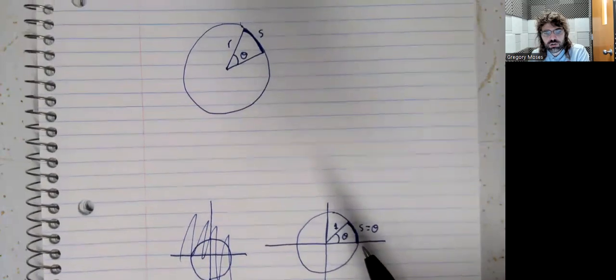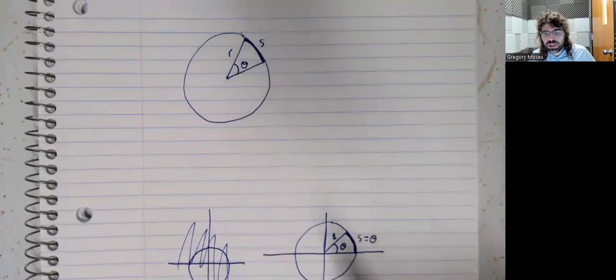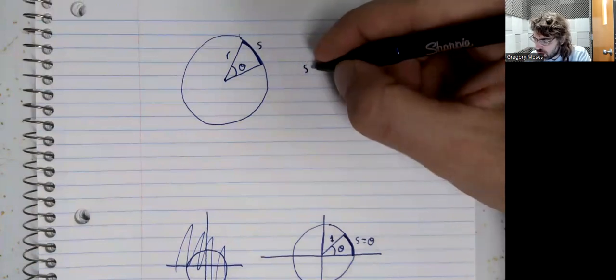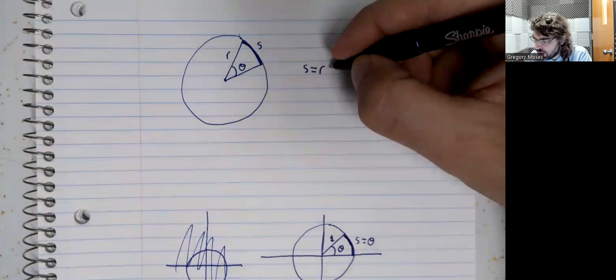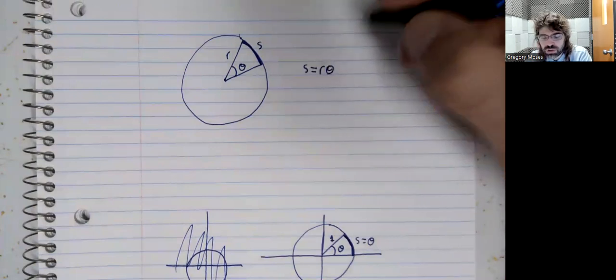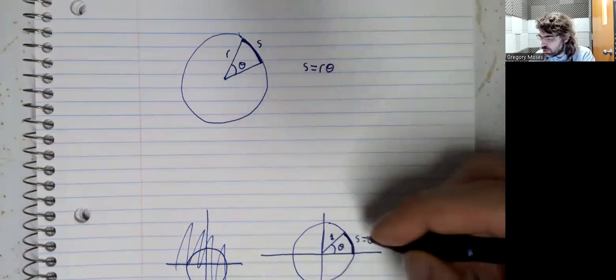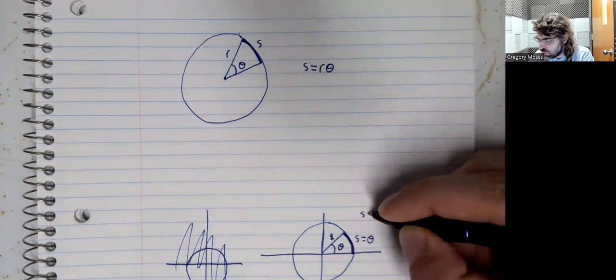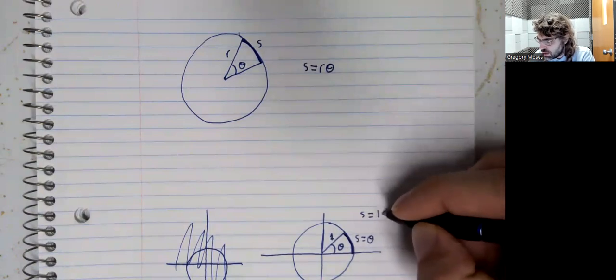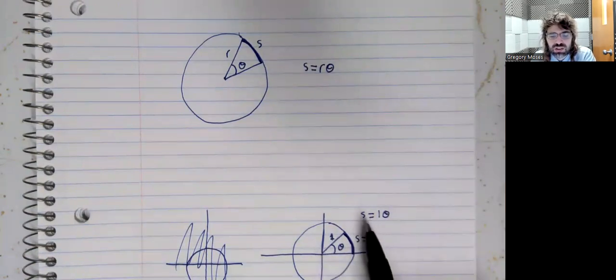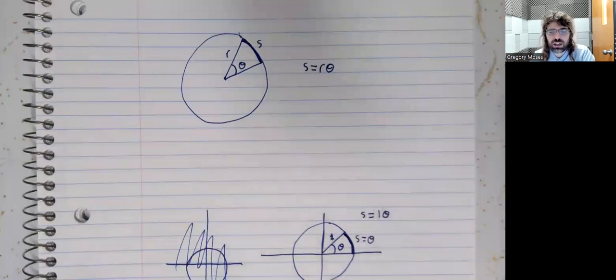In general, going up here, the arc-length is the radius times the angle. And you see down here, the radius is one, so the statement that the arc-length equals the angle is the same as saying that the arc-length is one times the angle.